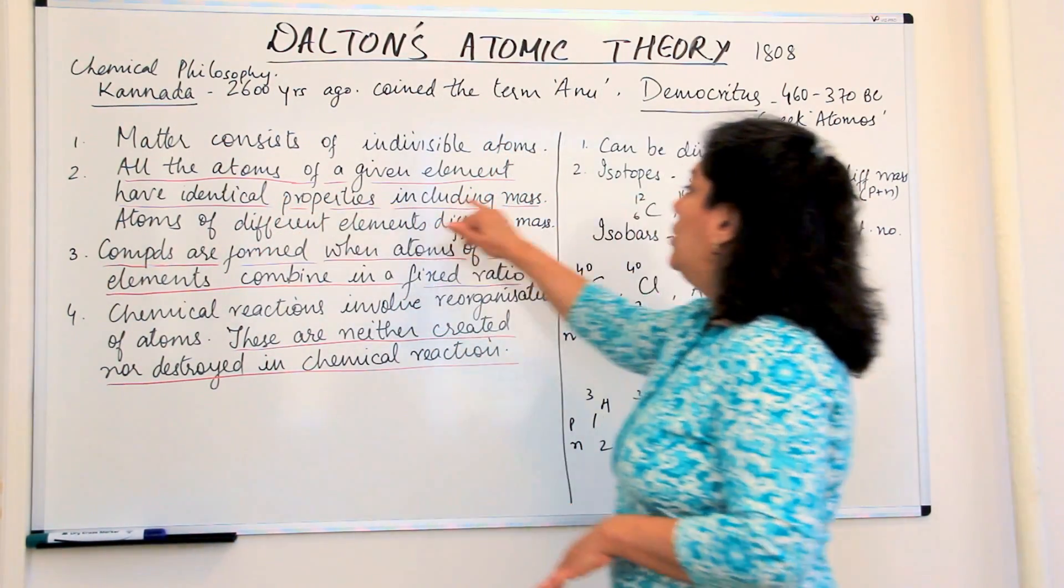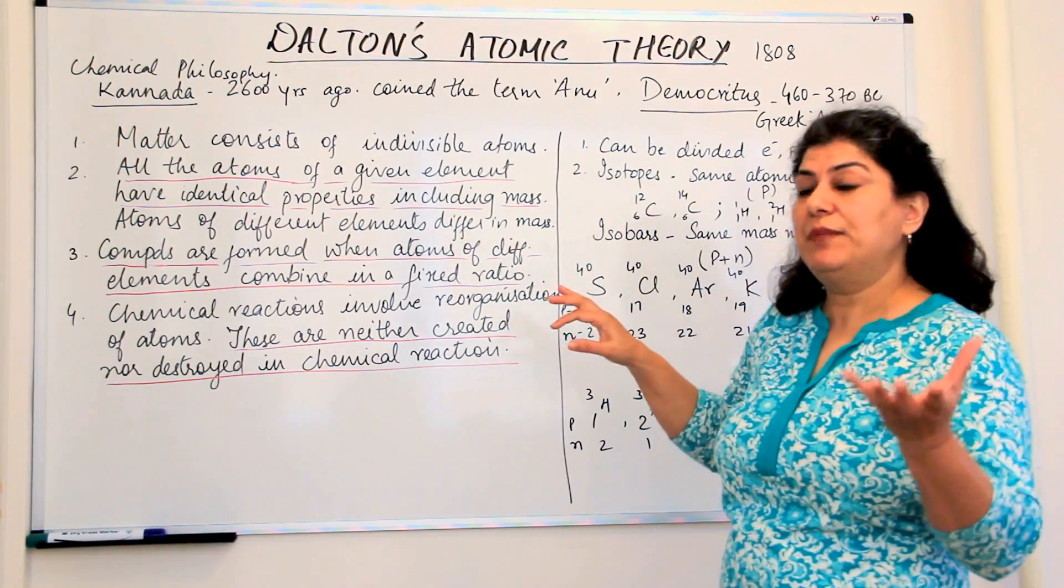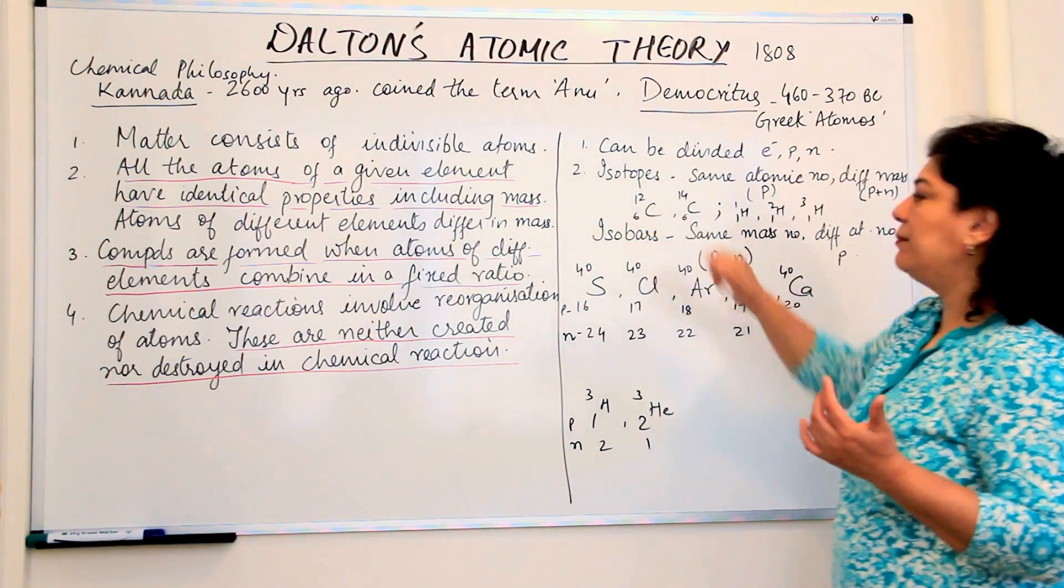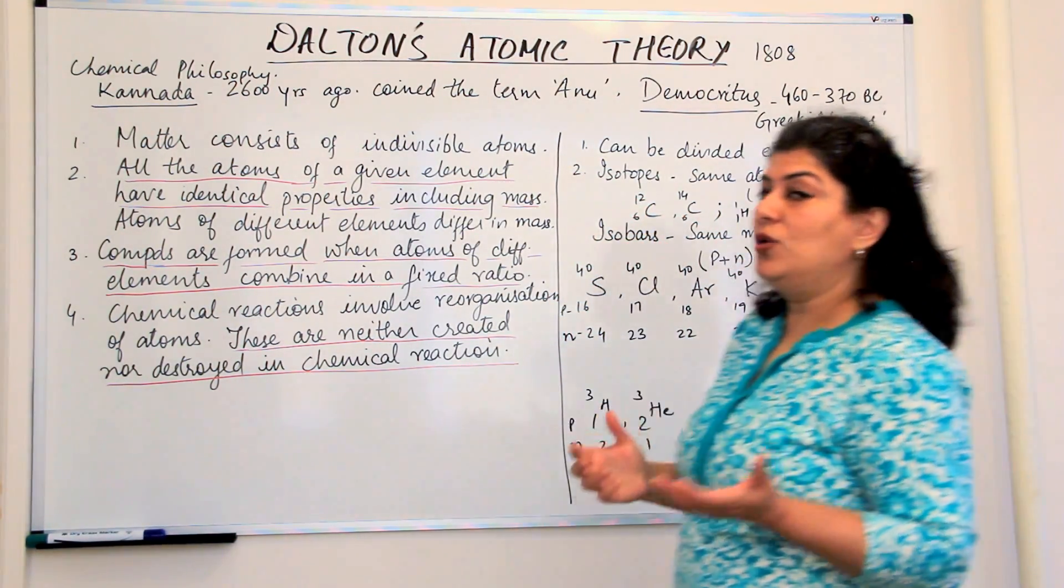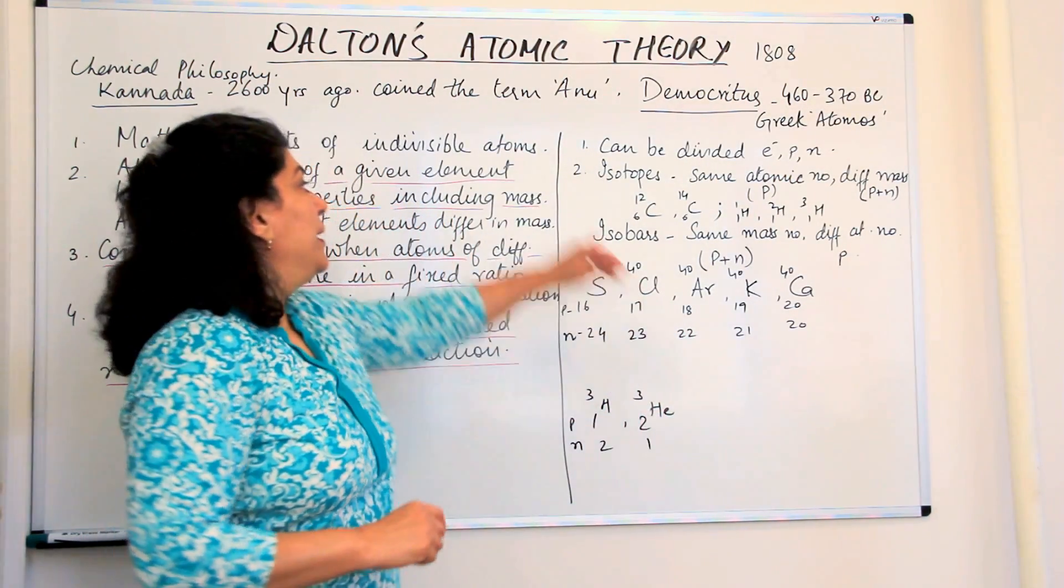So we know that such elements which are atoms of the same element which have the same atomic number but different mass numbers are known as isotopes. For example, carbon has two isotopes, carbon-12 and carbon-14.